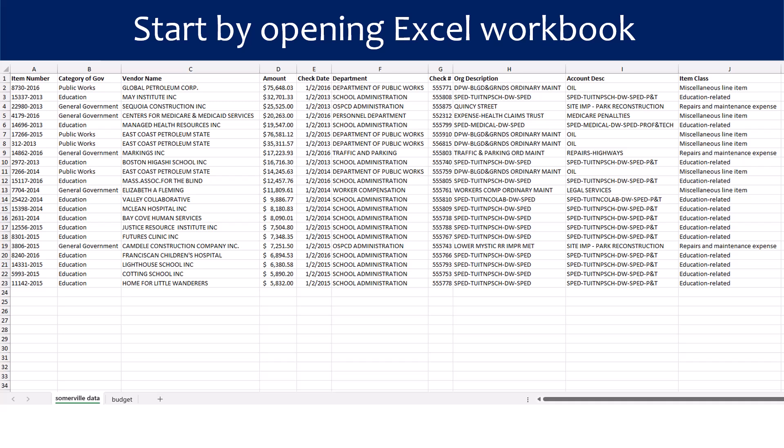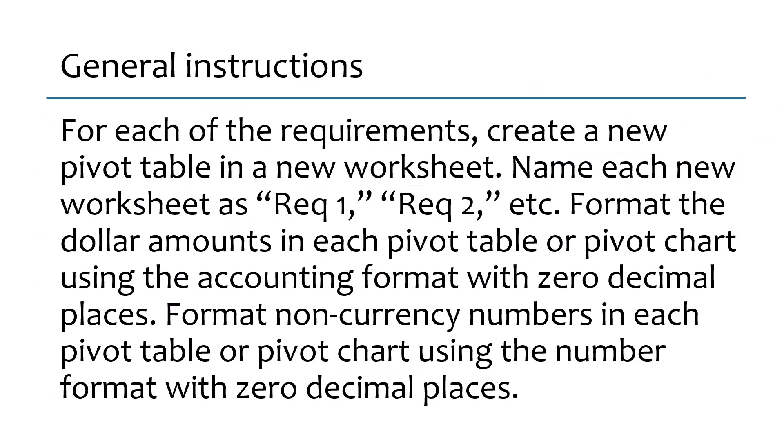Start this activity by opening the Excel workbook containing the Somerville data and budget worksheet. In general, for each of the requirements in this activity, create a new pivot table in a new worksheet. Name each new worksheet as Requirement 1, Requirement 2, etc. Format the dollar amounts in each pivot table or pivot chart using the accounting format with zero decimal places. Format non-currency numbers using the number format with zero decimal places.